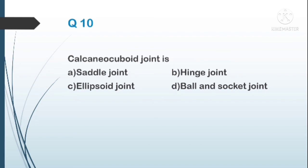The tenth question: the calcaneocuboid joint is — A) a saddle joint, B) hinge joint, C) ellipsoid joint, D) ball and socket joint. The answer is A, saddle joint.